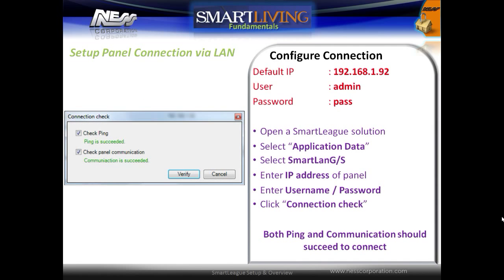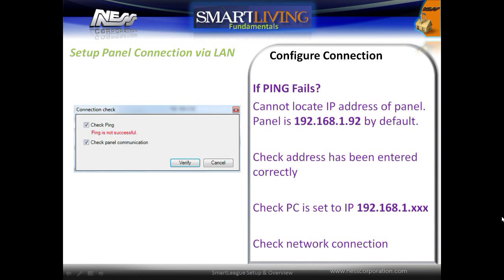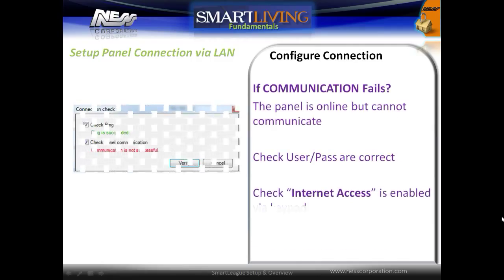Click the Connection Check button and verify the connection. Both a ping and a communication should succeed to connect. If a ping fails, the panel cannot be located at the entered address; check the address has been entered correctly and check the PC is set to the same address range. If a ping is successful but a communication fails, the panel is online but cannot communicate. Check the username and password are correct and also check that internet access is enabled in the system keypad.